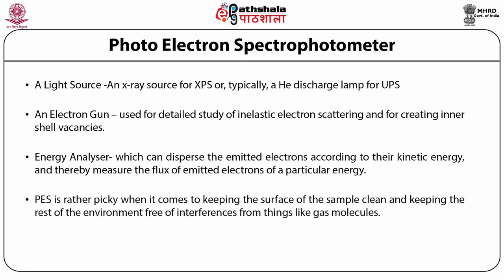Photoelectron spectroscopy is rather particular when it comes to keeping the surface of the sample clean and the environment free of interferences from gas molecules. The high vacuum is almost always an ultra-high vacuum (UHV) environment. The last component is an electron detector, which detects and counts the number of electrons.